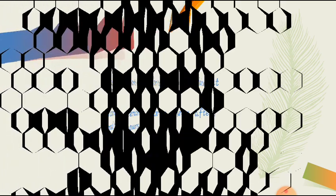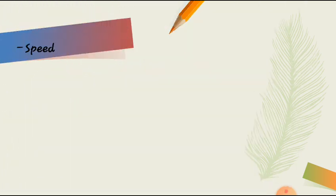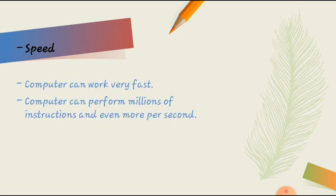Next, the next characteristic of the computer is speed. We all of us have experienced that the computer performs every single task very fast. In a blink of an eye, we get to see the result as soon as we input the data to the computer. The computer can work very fast. The computer can perform millions of instructions and even more per second according to the user's requirement.